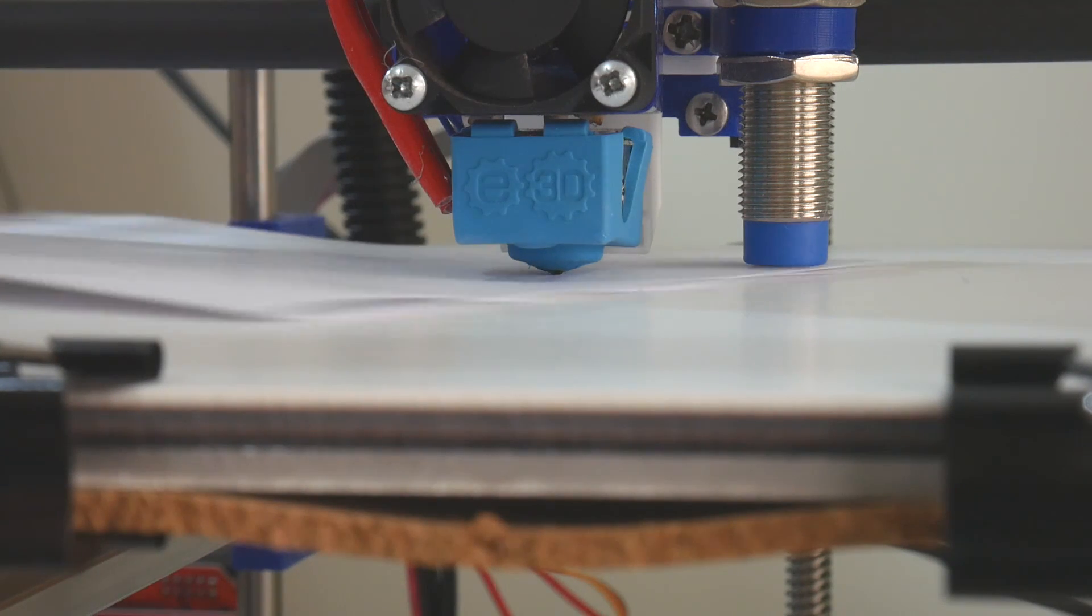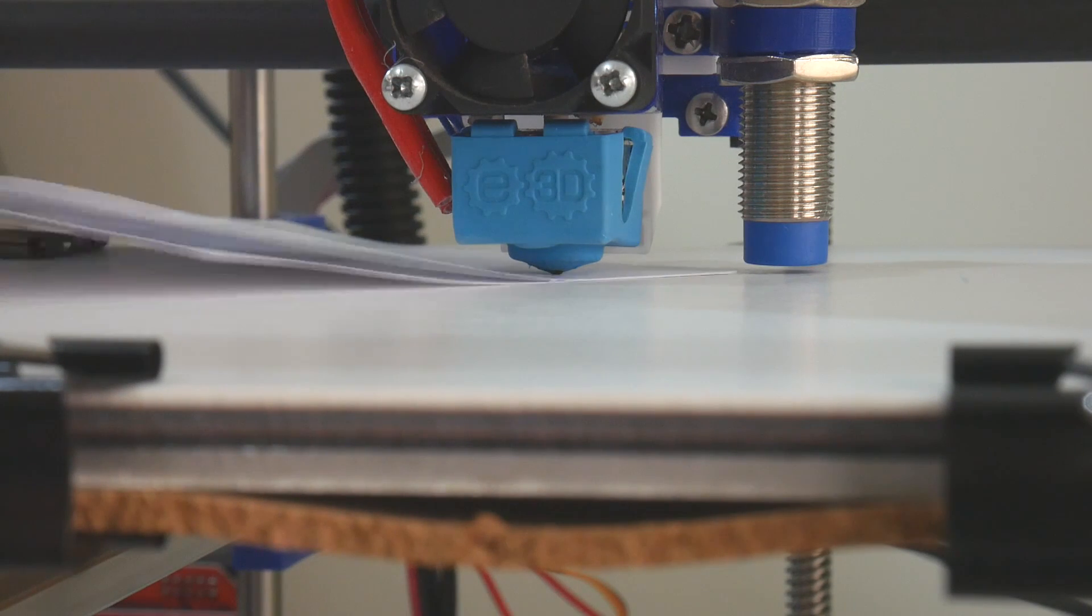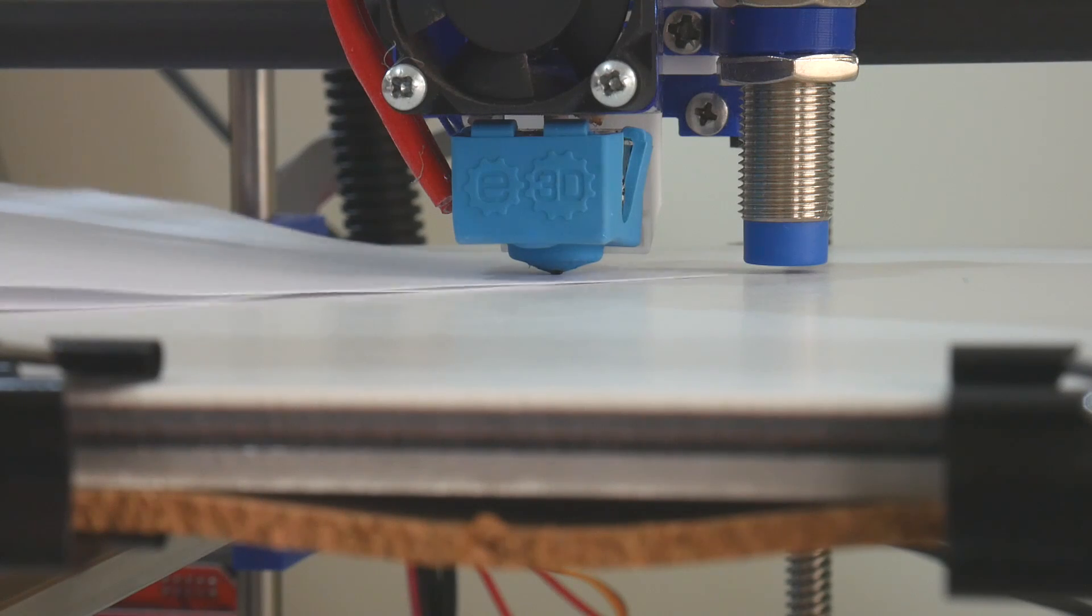Just recalibrate your Z-height. We want two pieces of paper distance between the nozzle and the print surface.